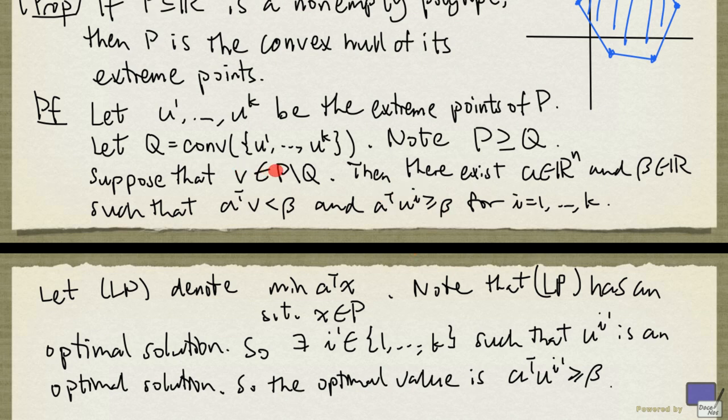But now V is in P, so V is a feasible solution to this LP problem. But the objective function value is a transpose v and is less than β. This contradicts that the optimal value is at least β.